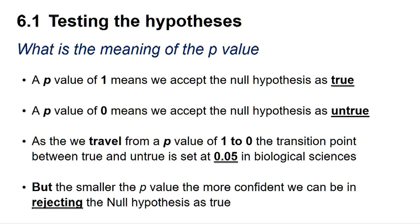So what is the meaning of the p-value? A p-value of 1 means we can accept the null hypothesis as true, whereas a p-value of 0 means we can accept the null hypothesis as untrue. As we travel from a p-value of 1 to 0, the transition point between true and untrue is set at 0.05 in the biological sciences.